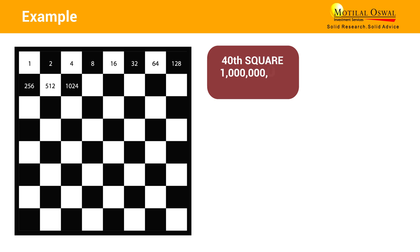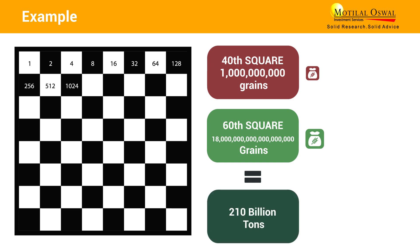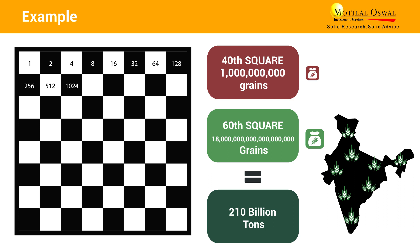On the 40th square, the king would have had to put one billion grains of rice. And finally, on the 60th square, the king would have had to put 18 quintillion grains of rice which is equal to about 210 billion tons, allegedly sufficient to cover the whole territory of India with a meter thick layer of rice.